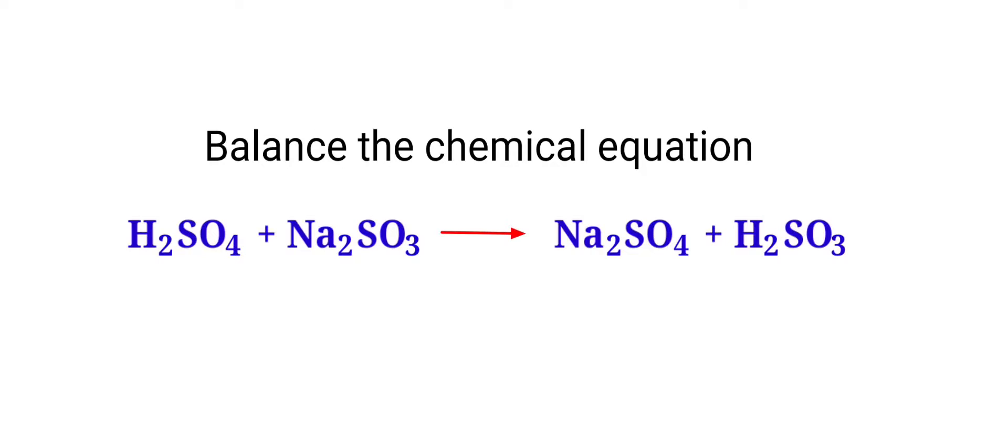Balanced chemical equation: Sulfuric Acid (H2SO4) plus Sodium Sulphite (Na2SO3) gives us Sodium Sulphate (Na2SO4) plus Sulfurous Acid (H2SO3).